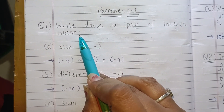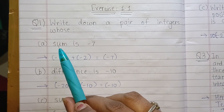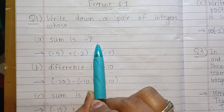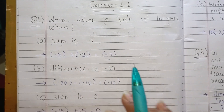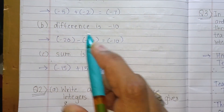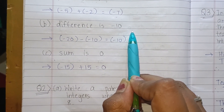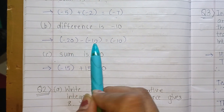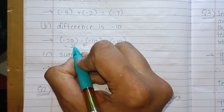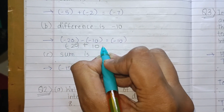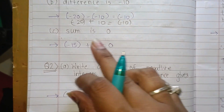Now Exercise 1.1, Question Number 1: write down a pair of integers whose answer is already given. Sum is minus 7: minus 5 plus minus 2 equals minus 7. Difference is minus 10: minus 20 minus minus 10 — minus minus becomes plus — so minus 20 plus 10 equals minus 10. Sum is 0: minus 15 plus 15 equals 0.